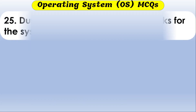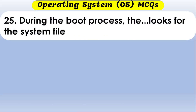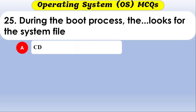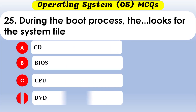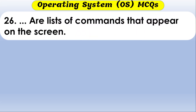Which file system does Windows typically use? The options are FAT16, FAT32, NTFS, and WinFS. The correct option is FAT16. During the boot process, the system looks for — the options are CD, iOS, CPU, DVD, and BIOS. The correct option is BIOS.